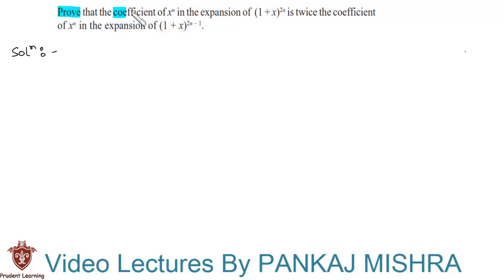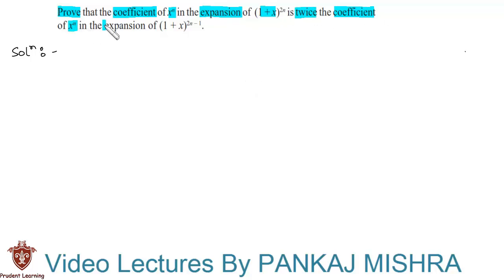Prove that the coefficient of x raised to n in the expansion of (1 + x) whole raised to 2n is twice the coefficient of x raised to n in the expansion of (1 + x) whole raised to 2n minus 1. Let us see the solution for this problem.